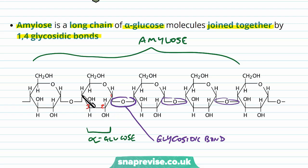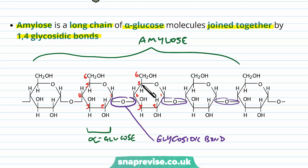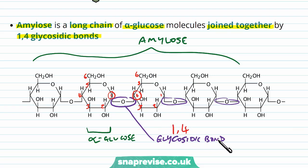Numbering the carbons one through six on each glucose, we can see we've got carbon one joining to carbon four on the adjacent glucose. This is why we call it a 1,4 glycosidic bond, and you'll see that happening along the whole length of the amylose — one to four, one to four, and so on. So every time there's a bridge, it's a 1,4 glycosidic bond.